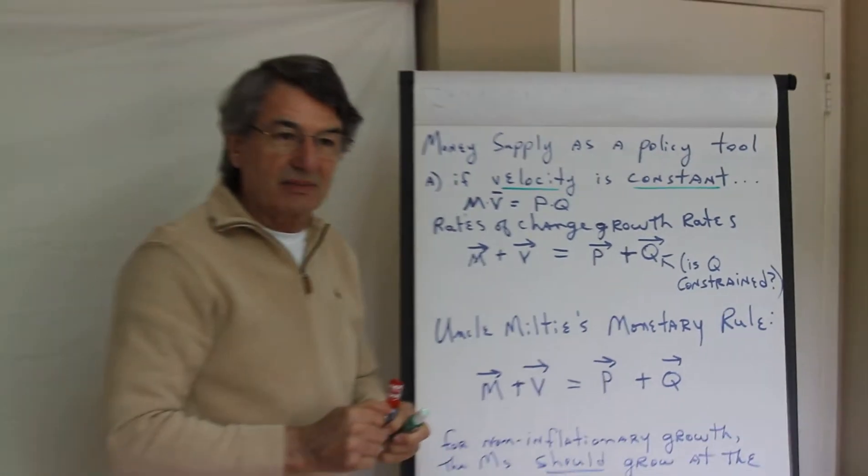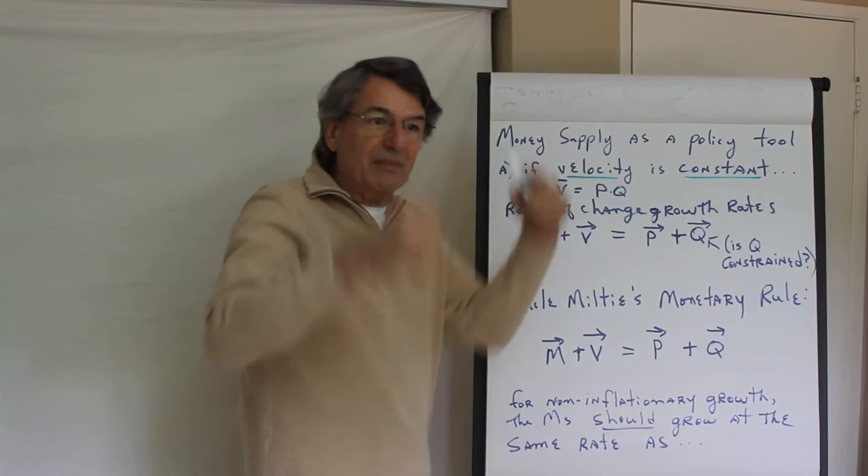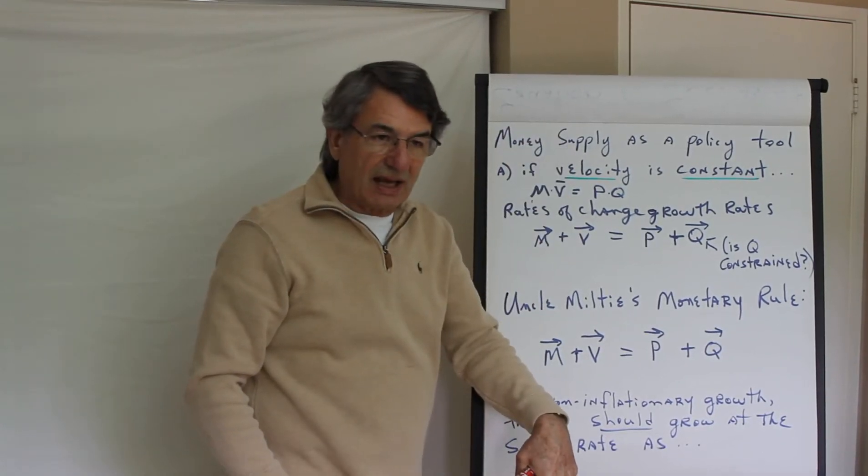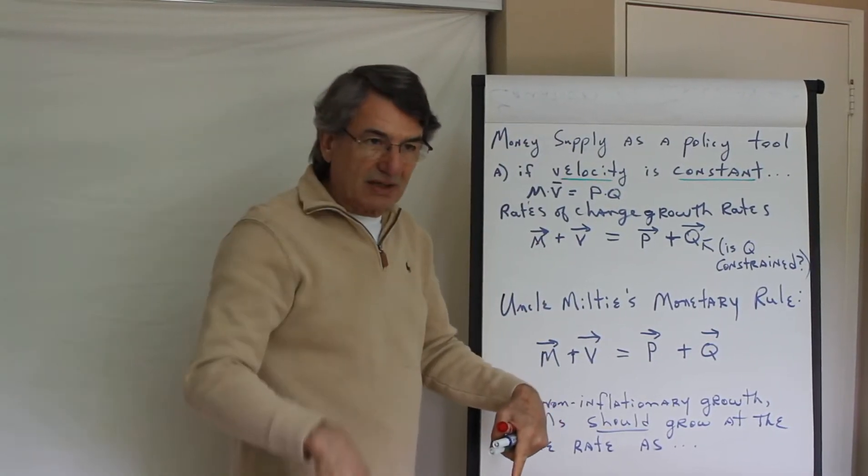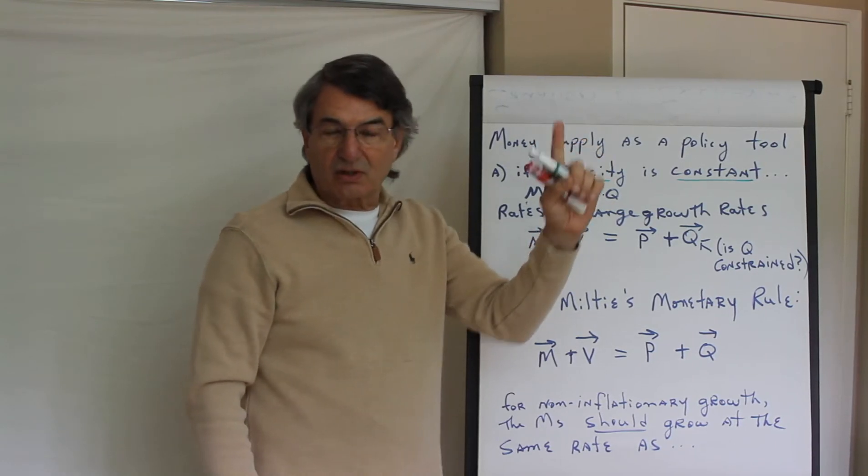Velocity is the inverse of money demand. When money demand goes up, velocity of circulation goes down. When money demand goes down, velocity of circulation goes up.